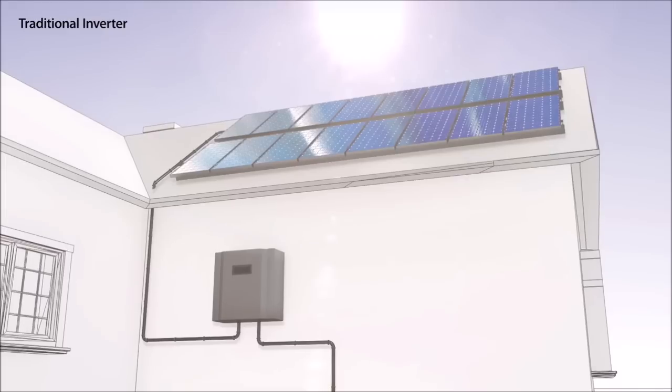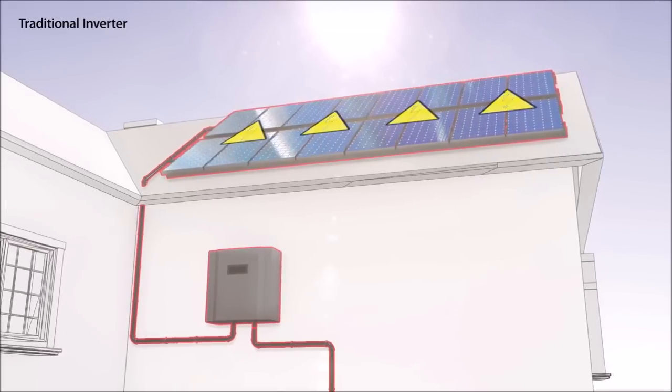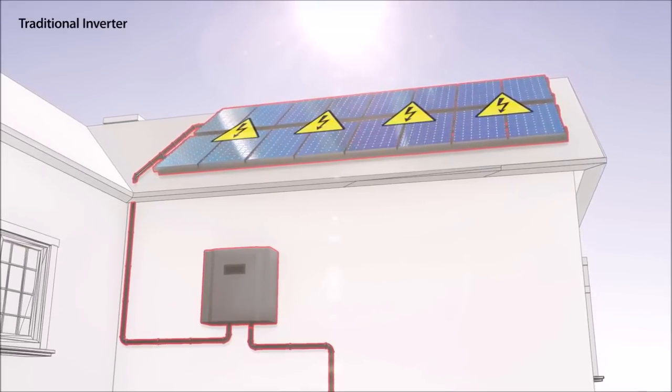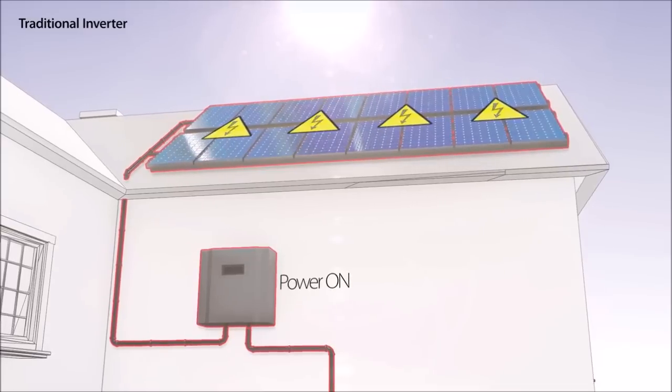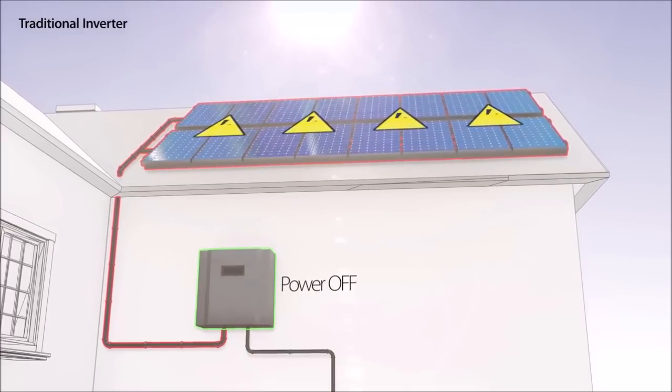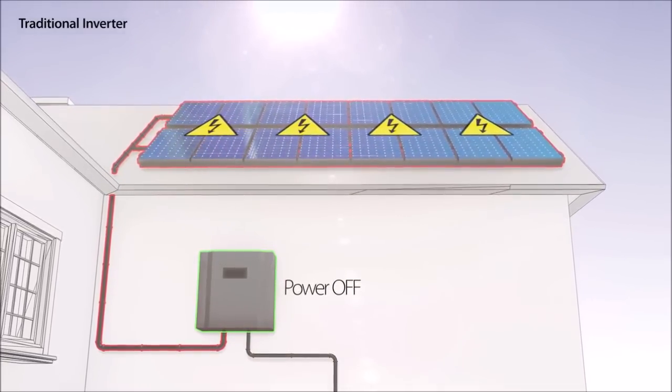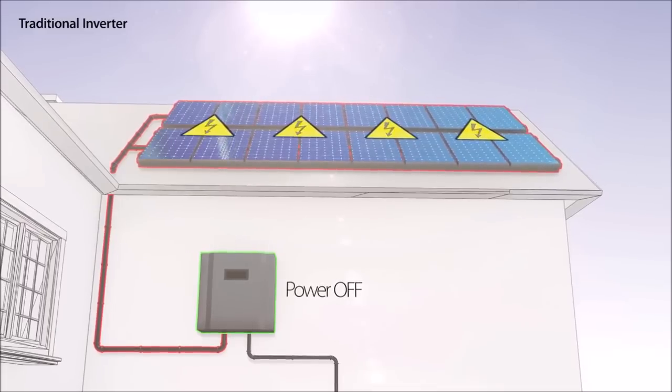The DC cables, which connect the panels to a string, carry high voltage as long as the sun is shining. The traditional inverter cannot shut down the panel's DC voltage and therefore poses serious risks to installers and firefighters.